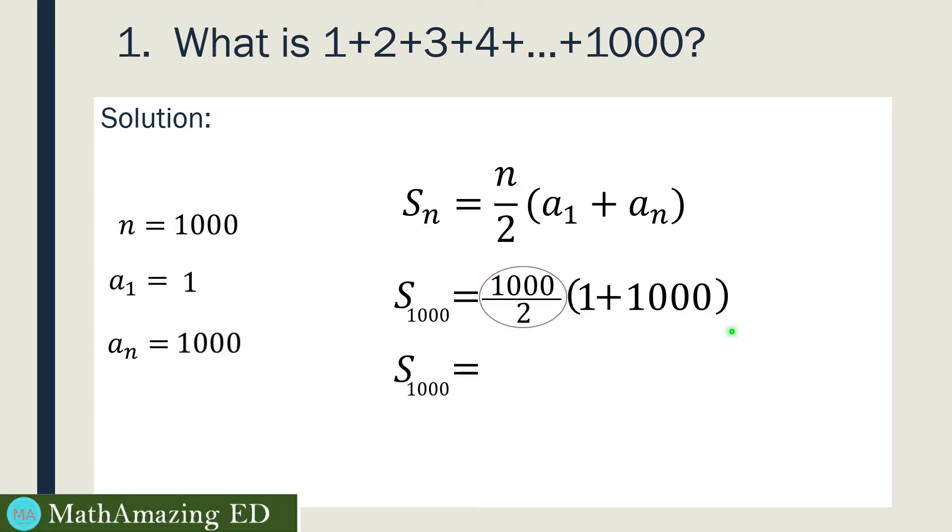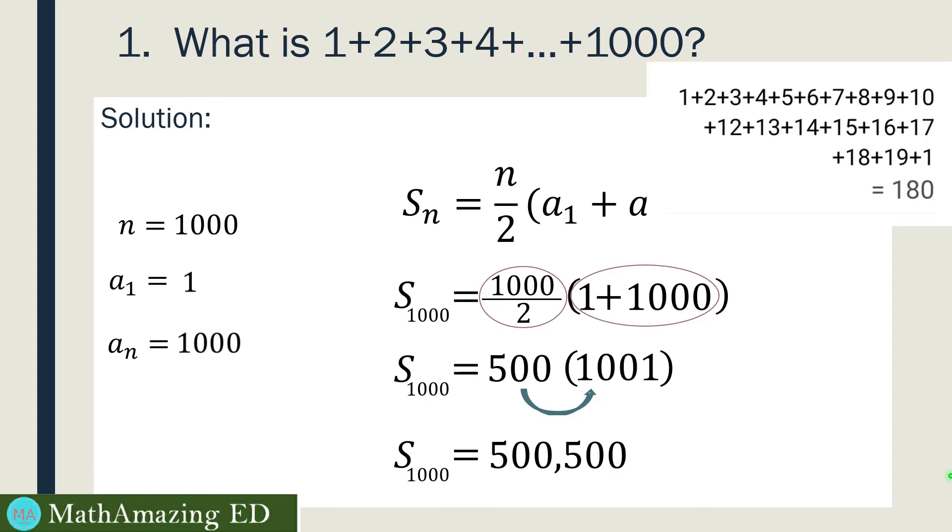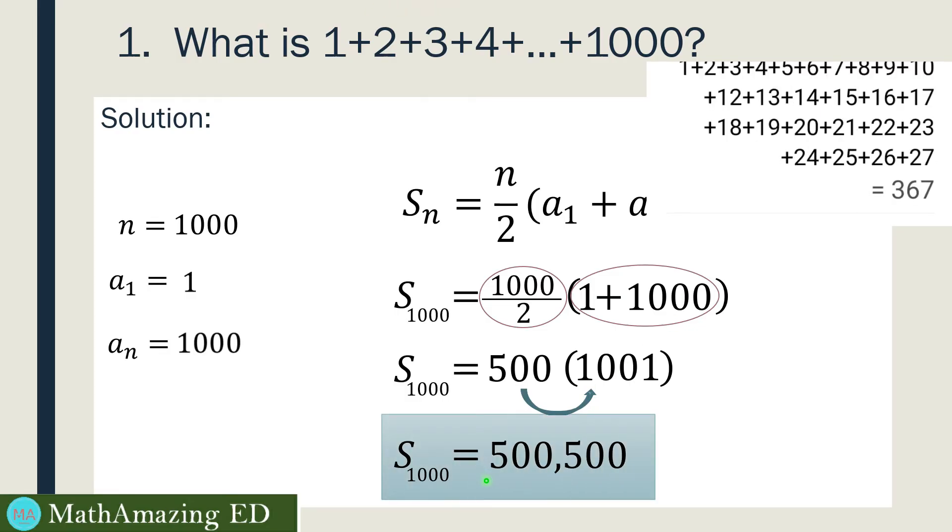And then divide, so 1,000 divided by 2 is just 500. Then for our quantity here, let us just add this one first. So 1 plus 1,000 is just 1,001. And the last step would be multiply 500 and 1,001. So the answer is 500,500. In other words, if you continue to add 1 plus 2 plus 3 plus 4 plus 5 and so on up to 1,000, if you add it all up, the result would be 500,500.